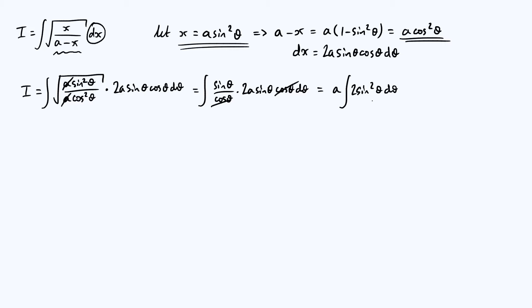So 2 sine squared theta is just 1 minus cos of 2 theta. So our integral becomes a times the integral of 1 minus cos of 2 theta with respect to theta.